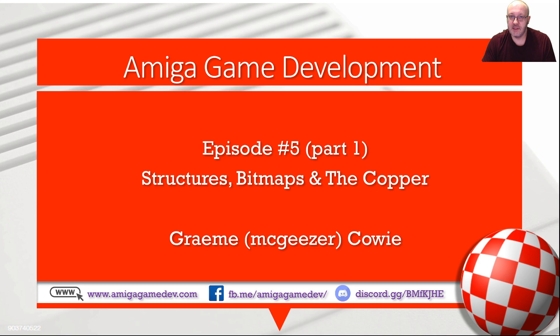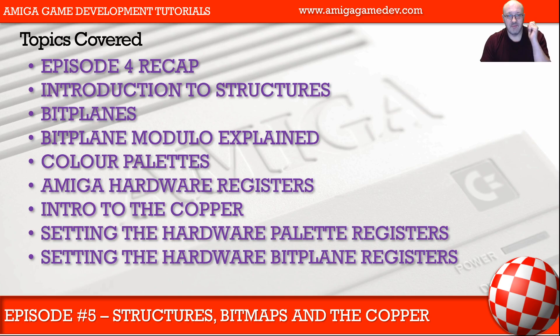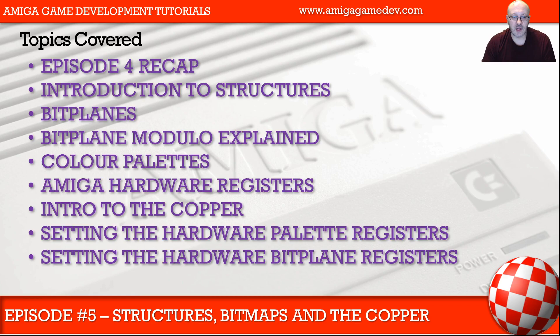Here's what we're going to be covering. I'll start with a recap, then an introduction to structures - we've already touched on those in episode two. We're going to talk about bitplanes, bitplane modulo, color palettes, and we're going to delve deeper into the Amiga hardware registers. In particular the hardware registers that control the display and palettes. We'll also be setting the palette registers and bitplane registers, and hopefully display something on screen.